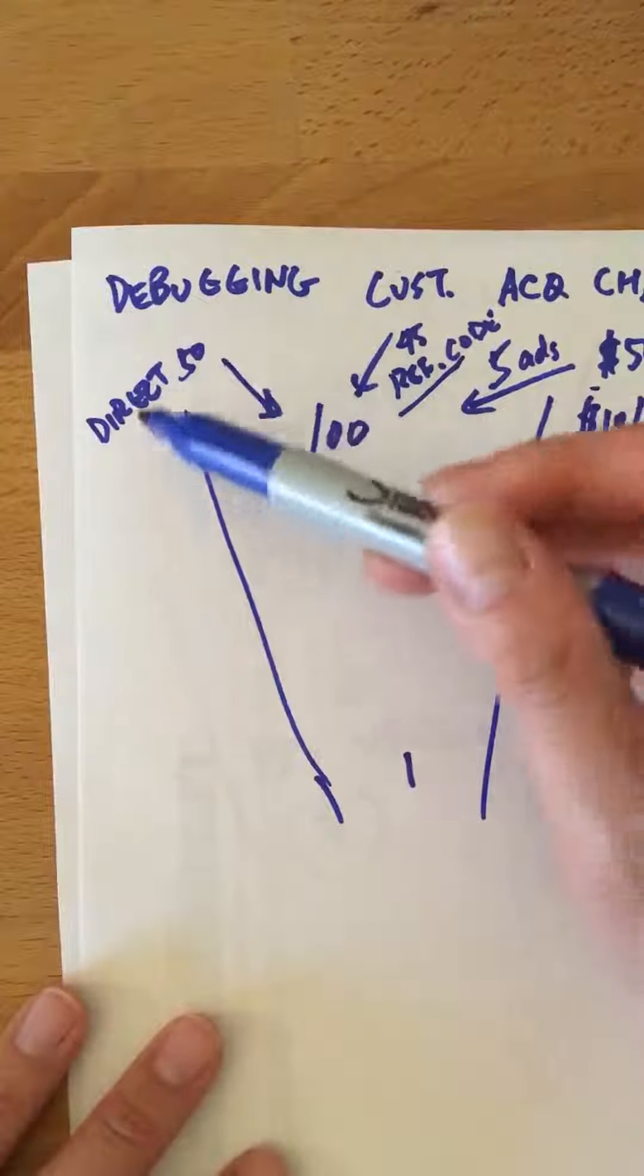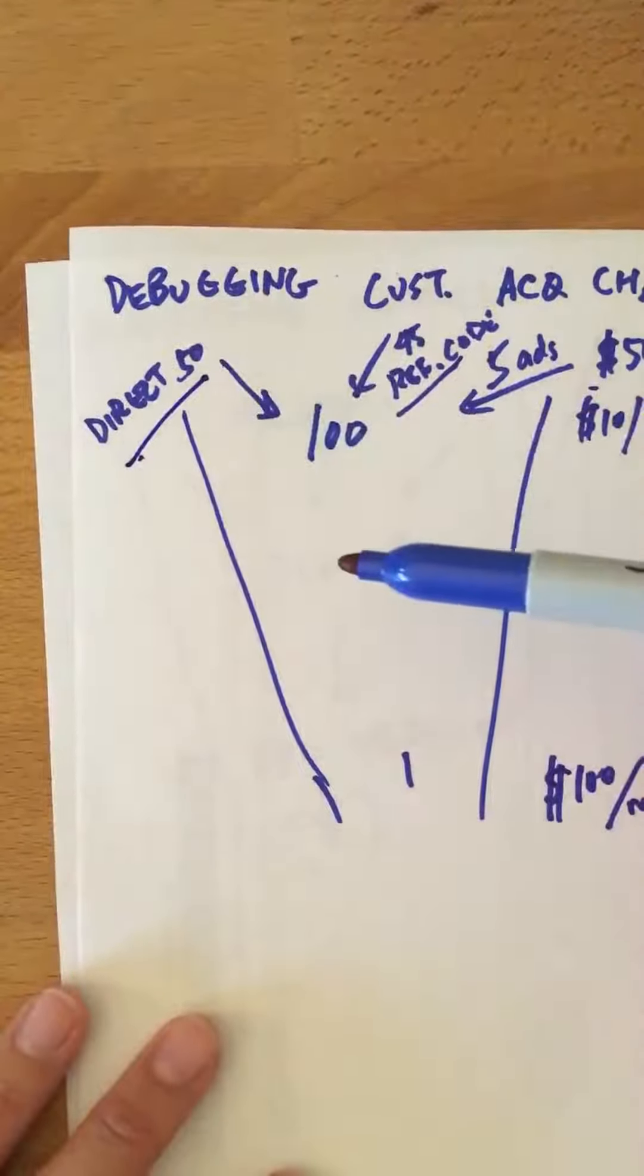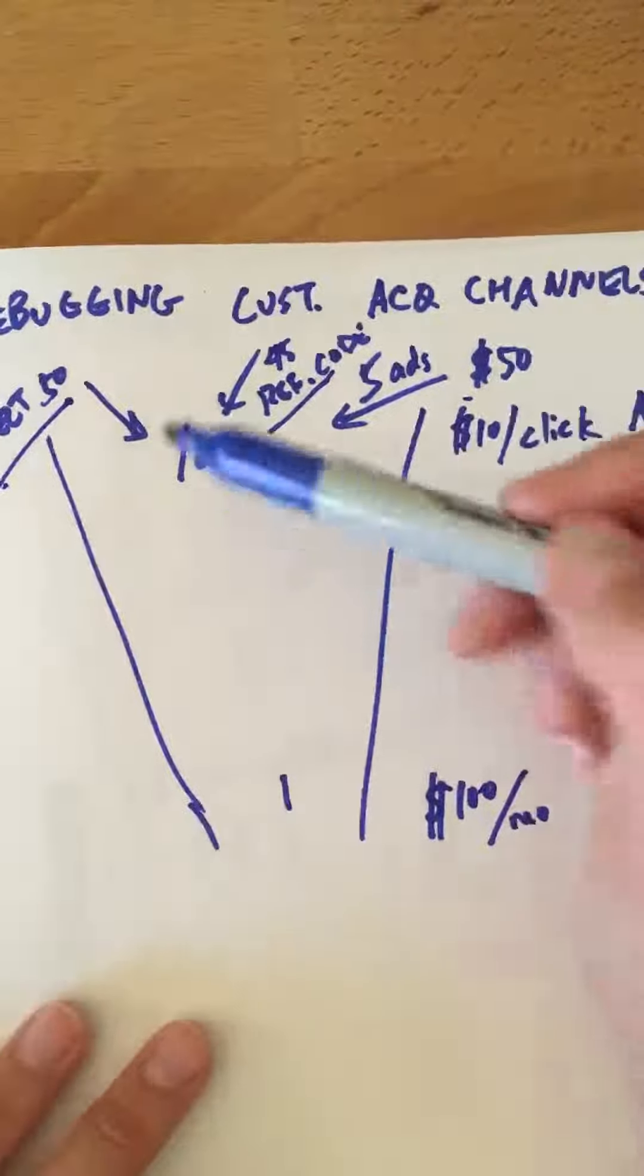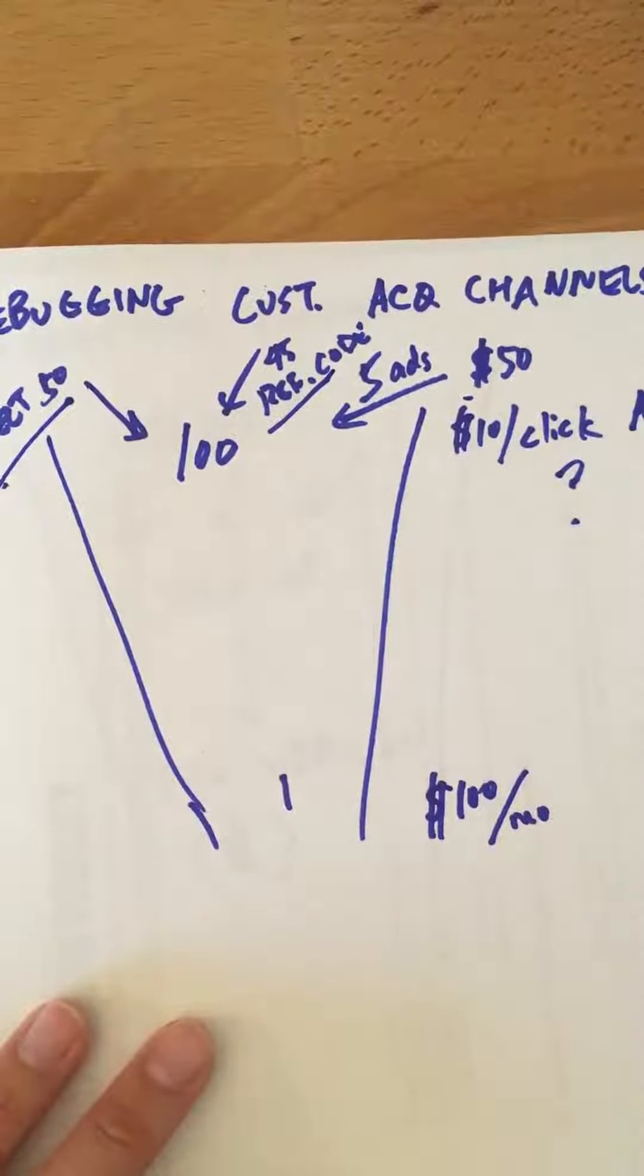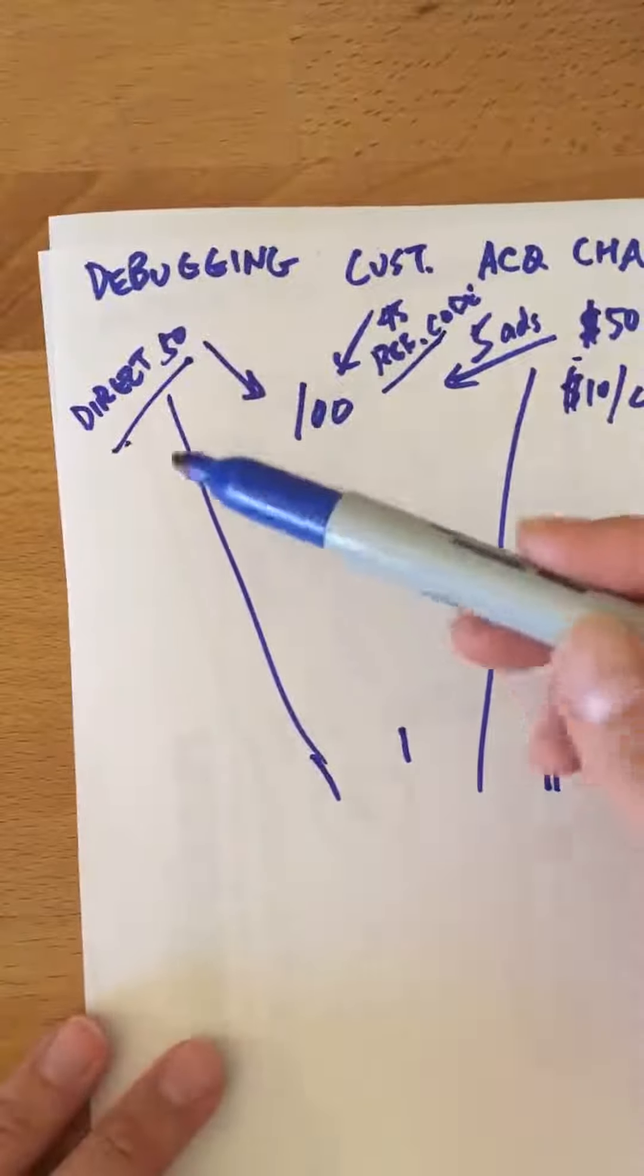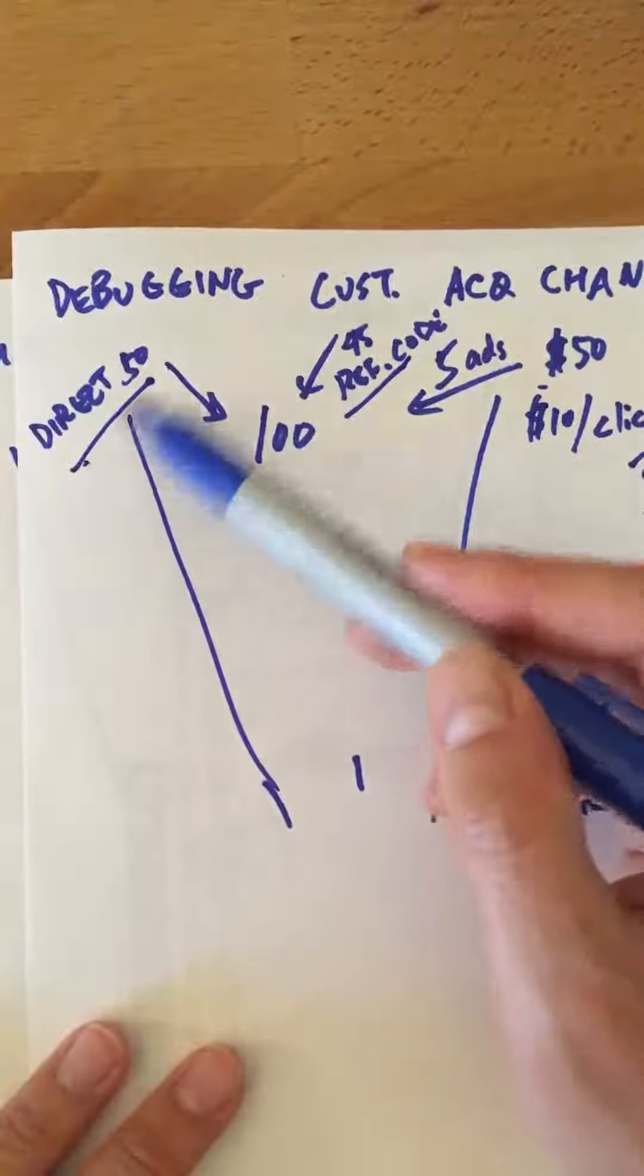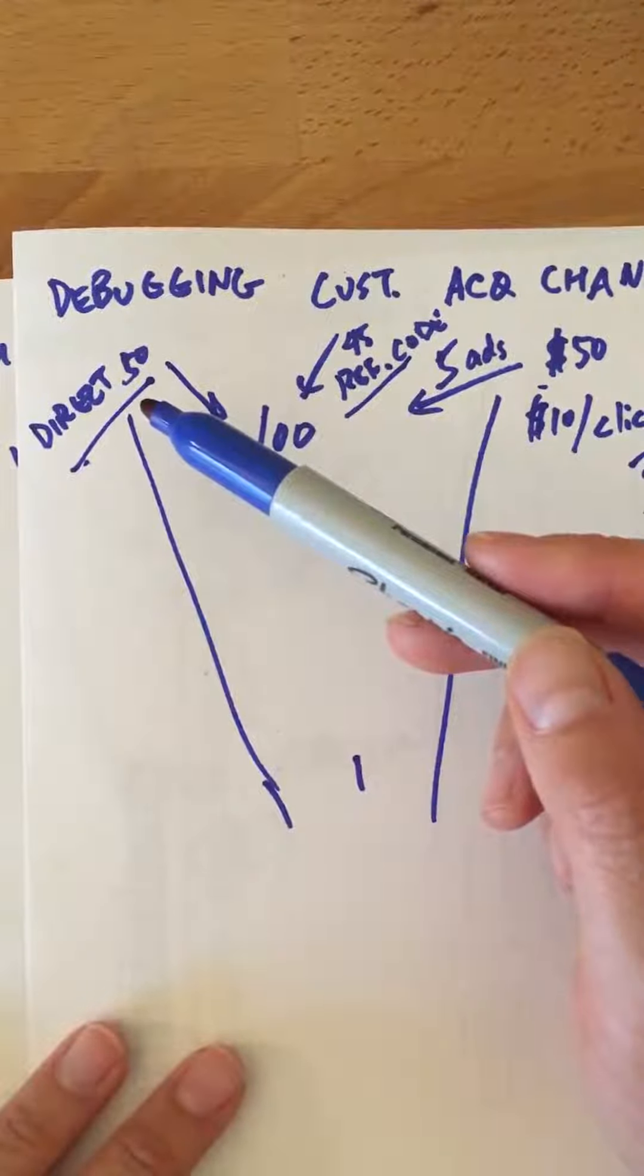And then lastly direct we cannot control, but you see one of the problems is when about half of your traffic is coming direct and it's unattributable then that can blend in with all the concerted marketing that we're doing and concerted marketing costs money. And so our concerted marketing may actually seem cheaper than it is because it's getting blended in with this unattributable traffic.